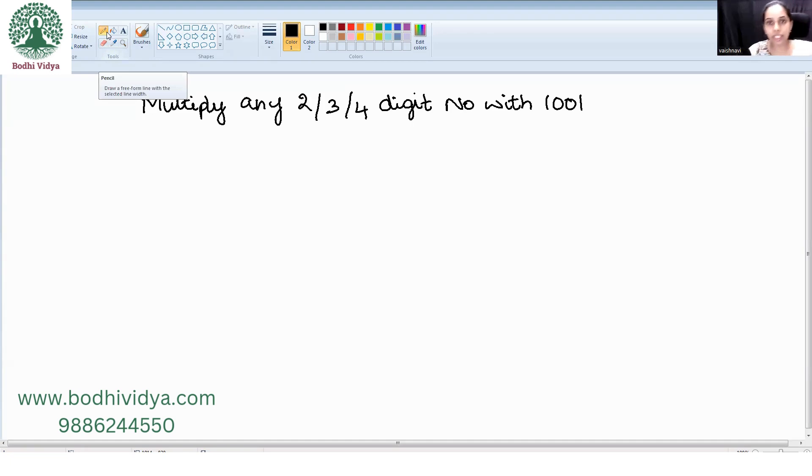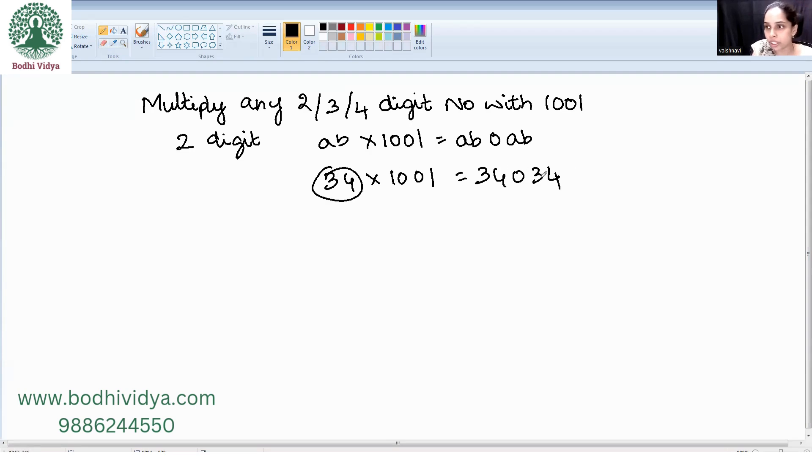First case: two-digit number. That is AB into 1001. The final answer would be AB0AB. For example, 34 into 1001 is 34034.